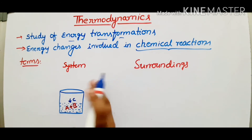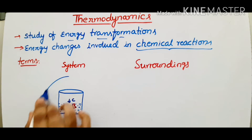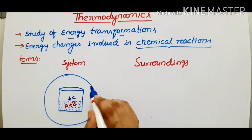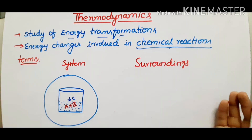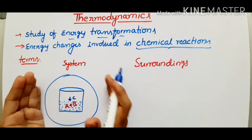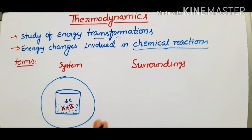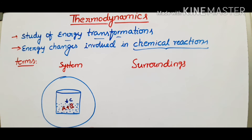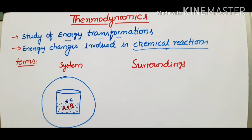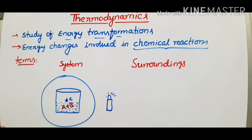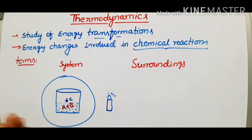We can separate the surroundings from the system. The surroundings are connected to the system — the space around it. The surroundings are all other matter except the system, and they are able to interact with that system.